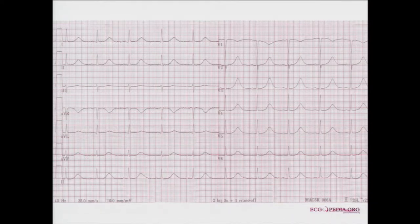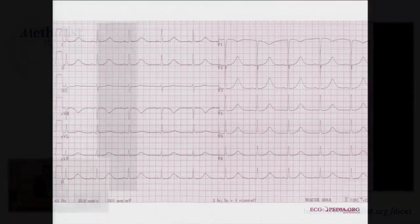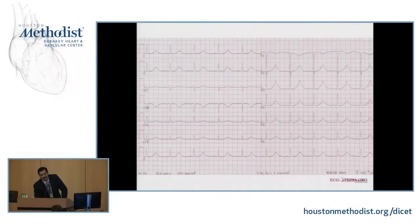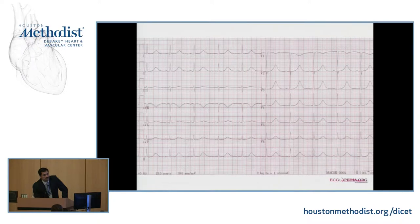I don't expect people to walk around measuring square roots and all that, so I'm going to give you an easy formula to correct the QT. For every 10 beats above 60, add 20 milliseconds. Measure the QT, look at the heart rate, and add 20 milliseconds accordingly. When you're in the 480 to 500 range, that is prolonged QT, straightforward.